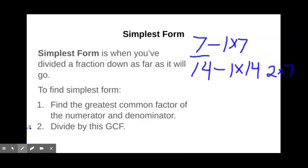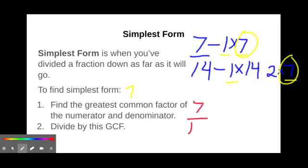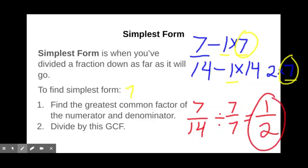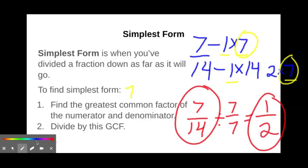Right away, we can see that these two numbers have 1s and 7s in common, and 7 is clearly the greater of the 2. So my greatest common factor is 7. Now, we need to divide our numerator and denominator by that greatest common factor. 7 divided by 7 is 1. 14 divided by 7 is 2. So the simplest form of 7 fourteenths is 1 half. These two fractions are equivalent.